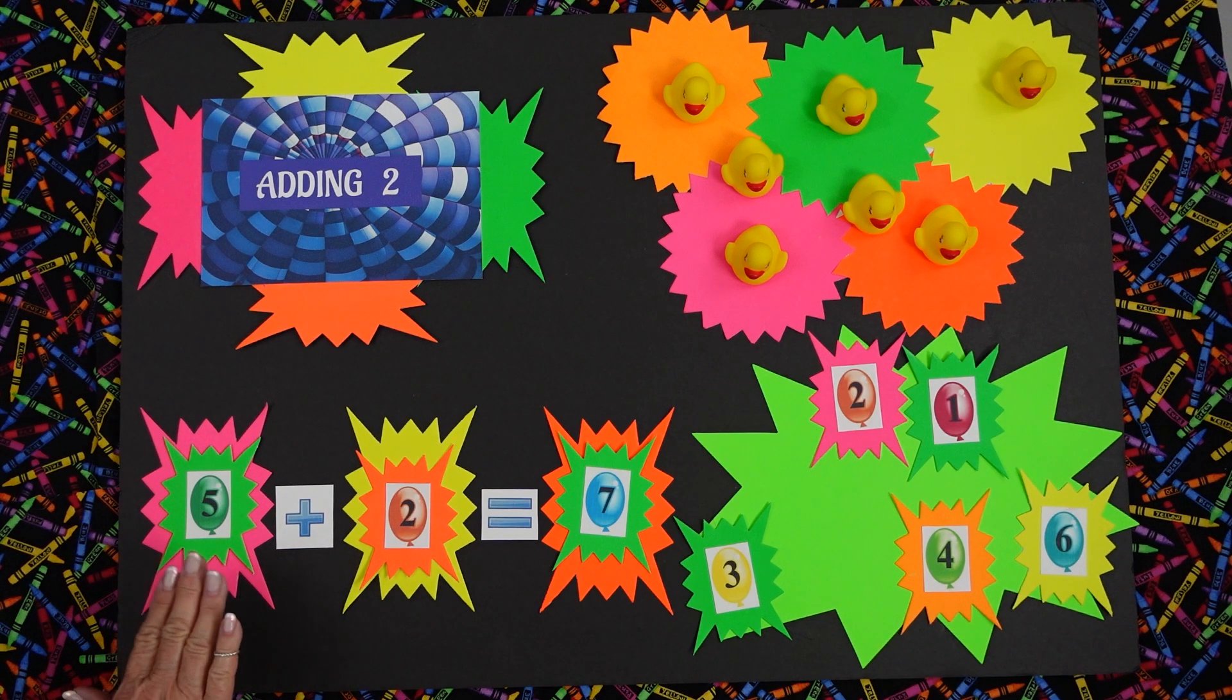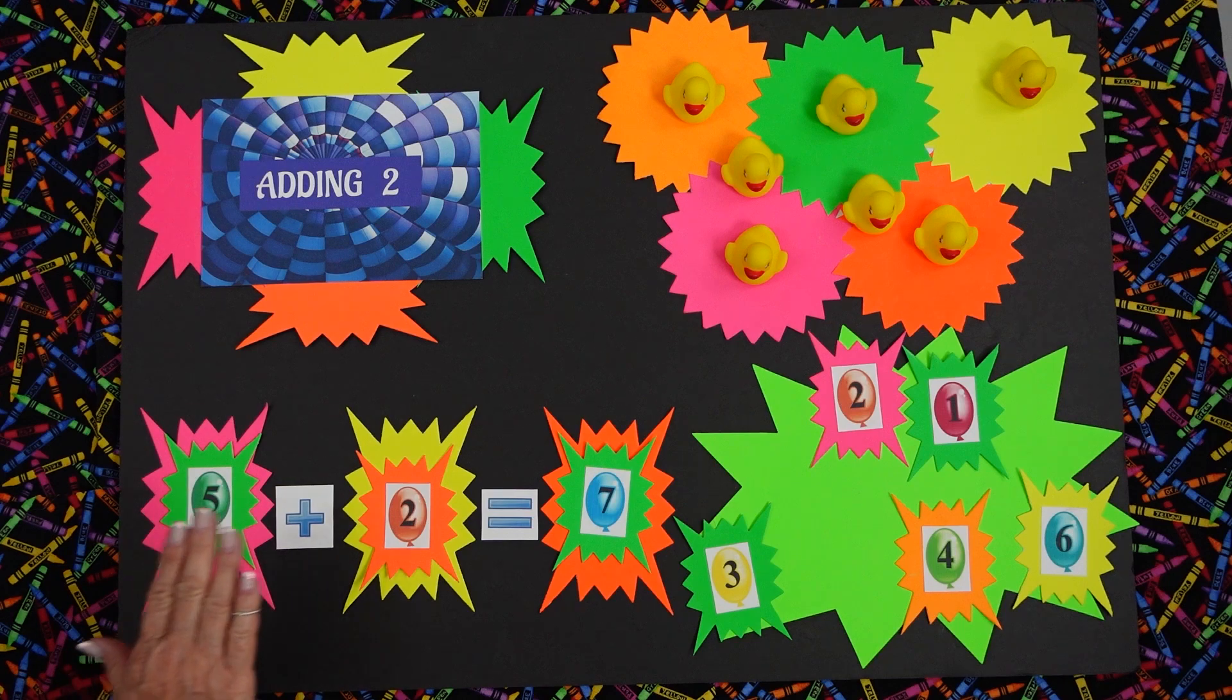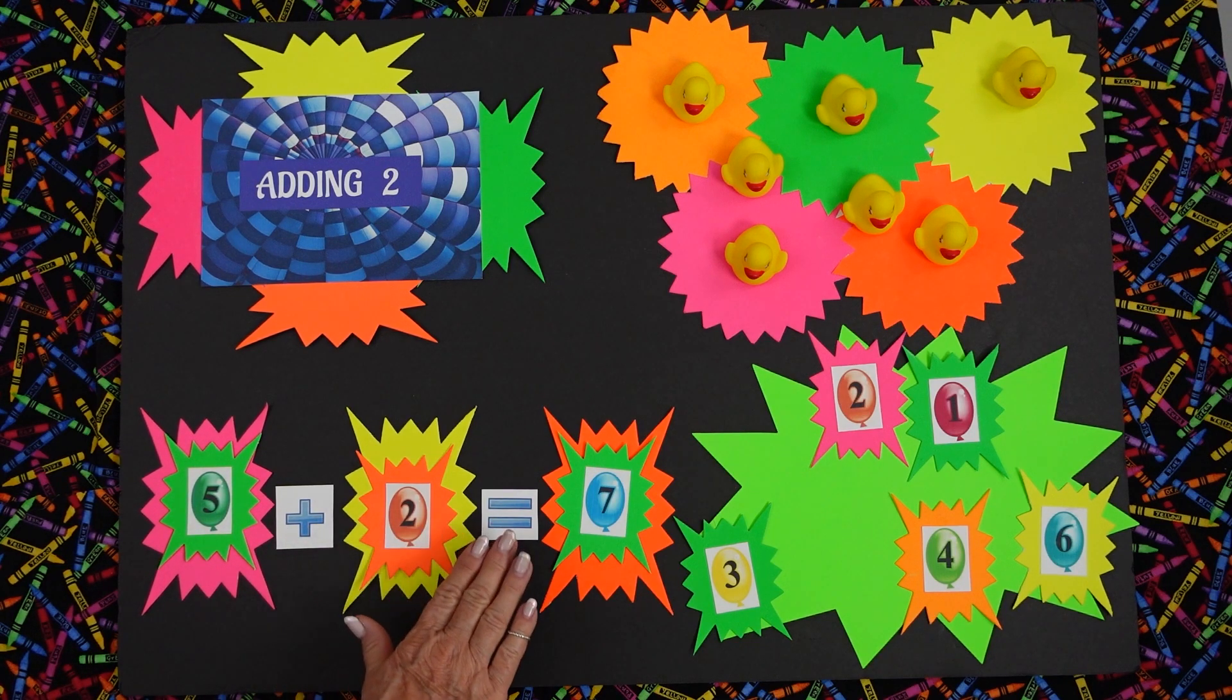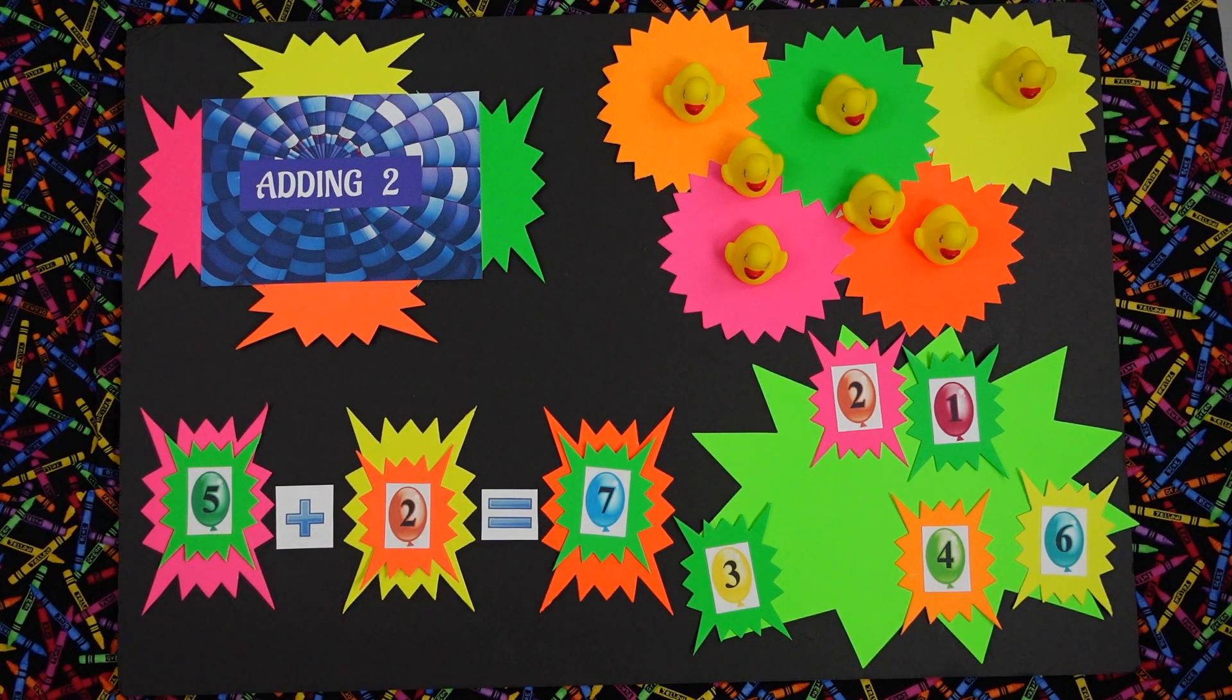The number seven is right in the right spot. Yay. Shall we read the equation together? Yes. Okay. Five plus two equals seven. Seven. Very good. Well, that concludes our lesson today on adding two. Thank you, Lily. You're welcome. Thank you, Jonathan. You're welcome. And thank you for watching. Two Creative Teachers. Yay. Yay.